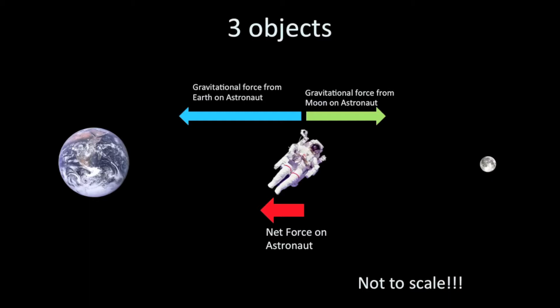Where could the astronaut go so that the force toward Earth and the force toward the Moon are equal? Going further left wouldn't help — the Earth's arrow would get bigger and the Moon's smaller. But moving to the right of the center point, the Moon's arrow would get bigger and Earth's smaller. Somewhere between the midway point and the Moon, there is a location where the two forces are exactly equal and balanced. At that point, the net force is zero, and the astronaut wouldn't accelerate in any direction. That's another way to analyze a situation like this.